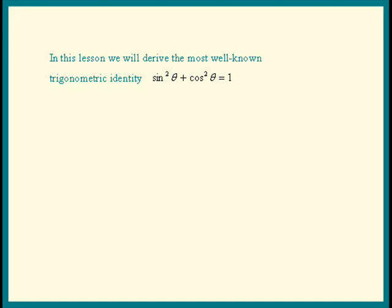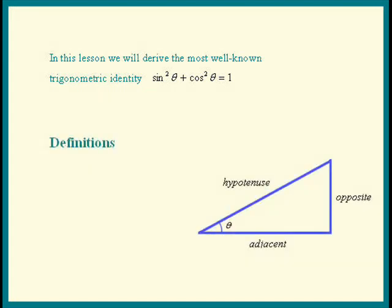Let's review the definitions of sine and cosine. I'm going to omit saying the angles, okay? Instead of saying sine theta, I'll just say sine. So, we get sine is opposite over hypotenuse. Cosine is adjacent over hypotenuse.